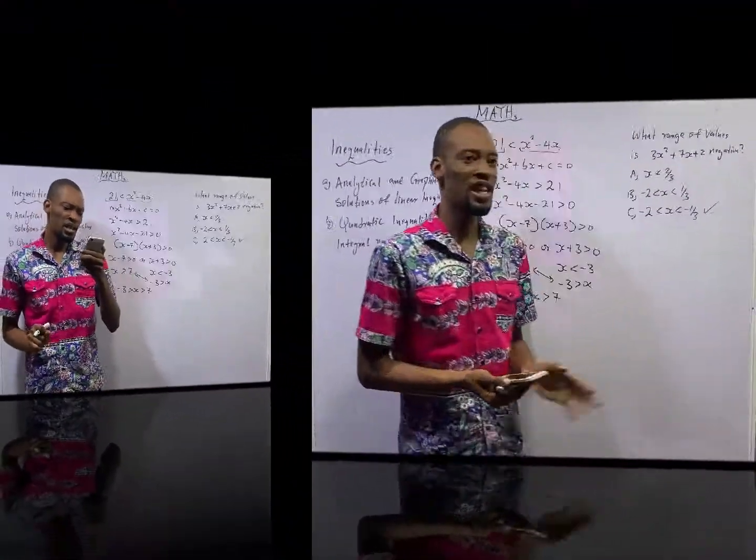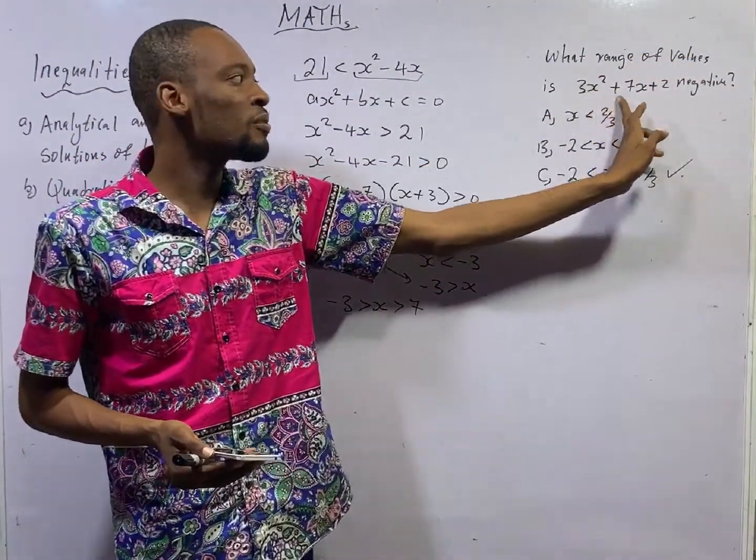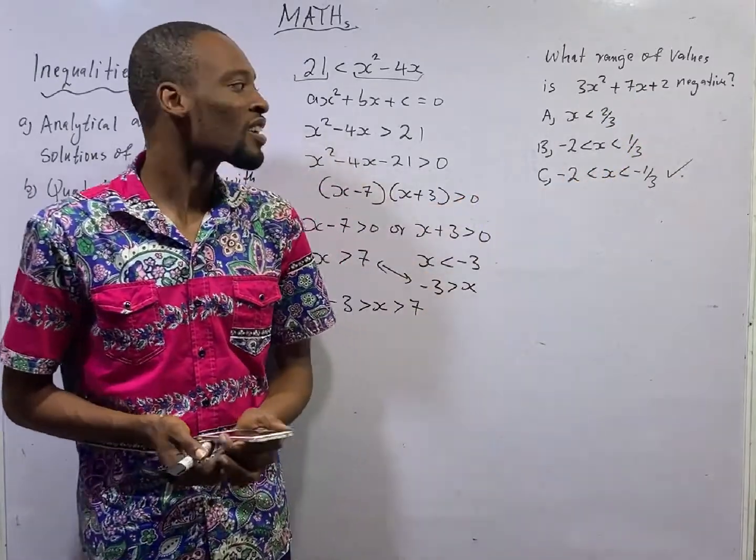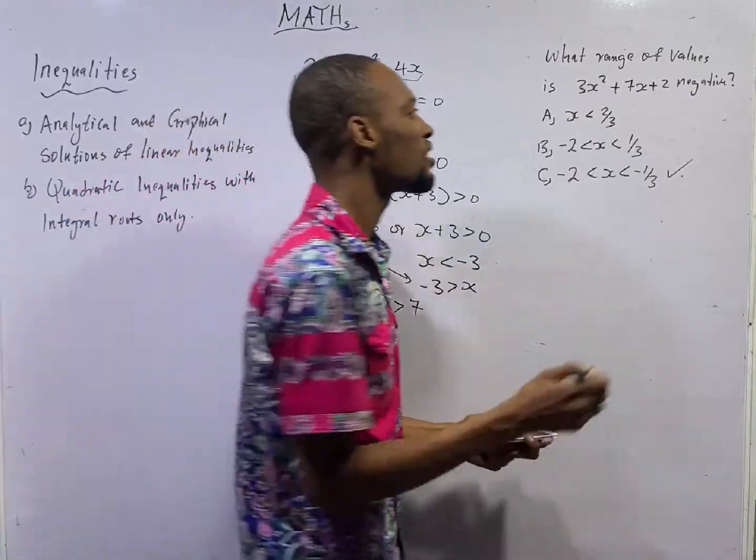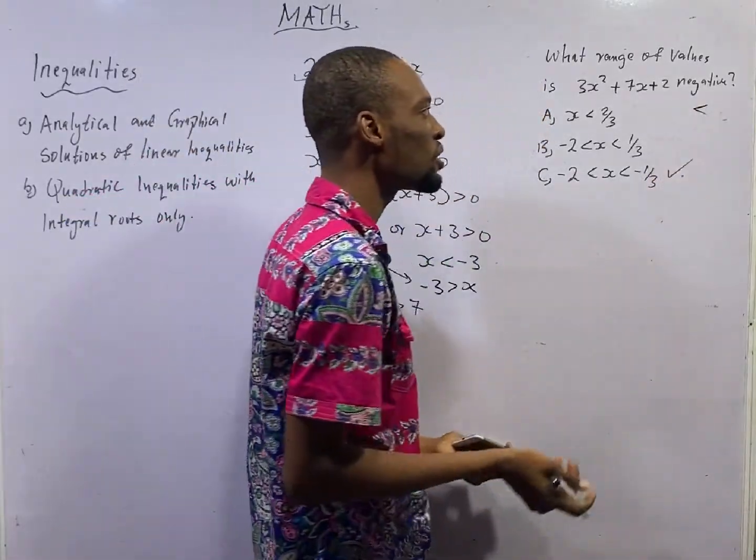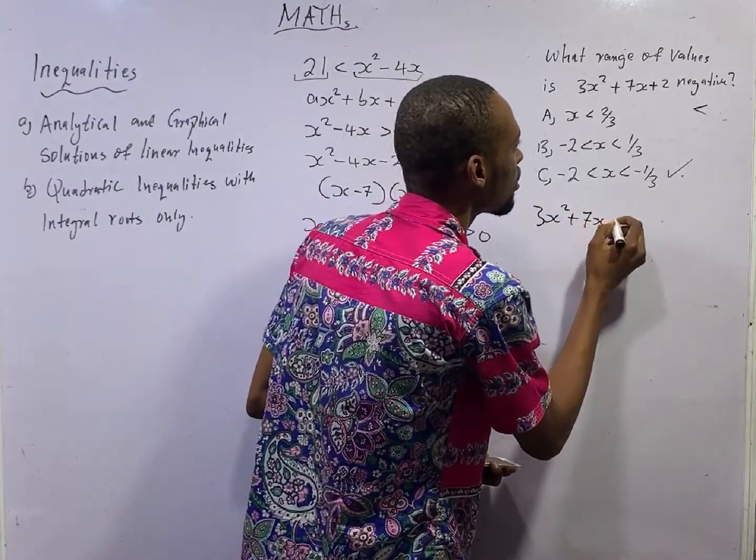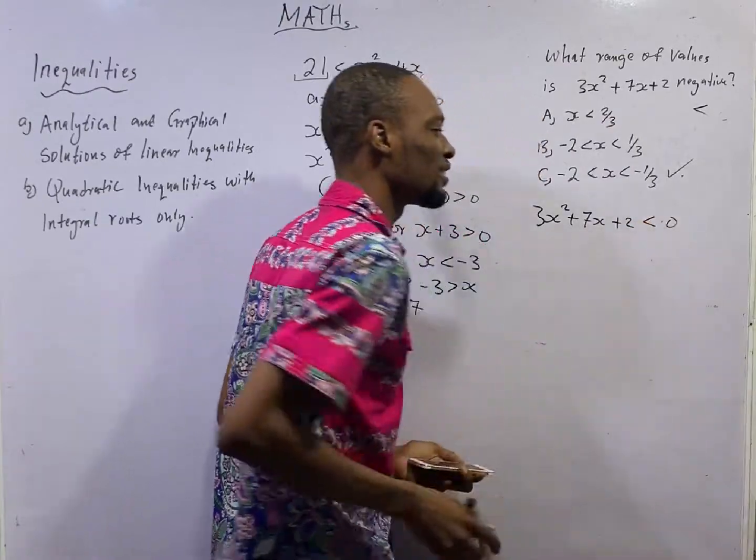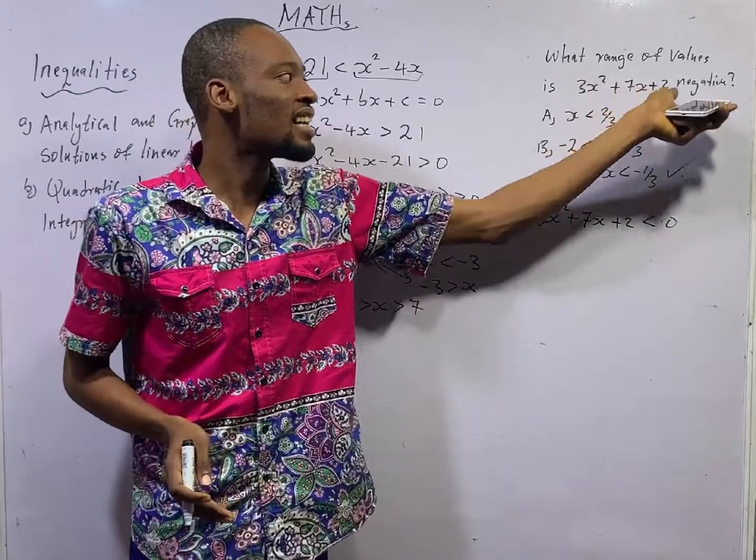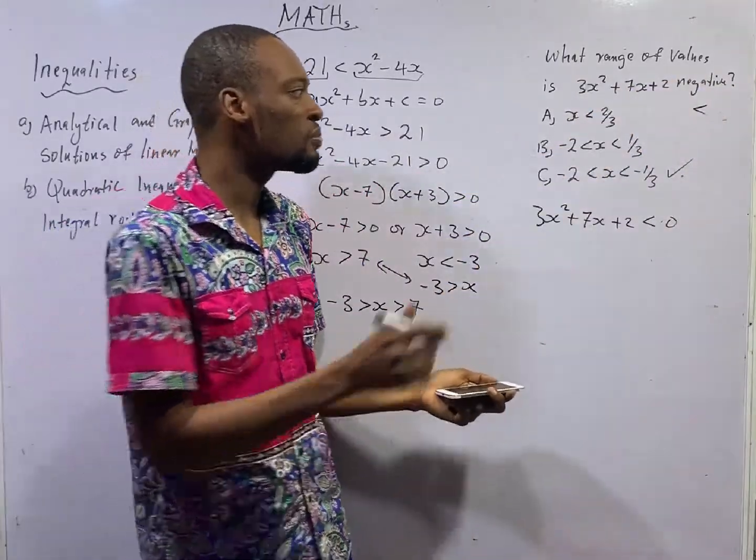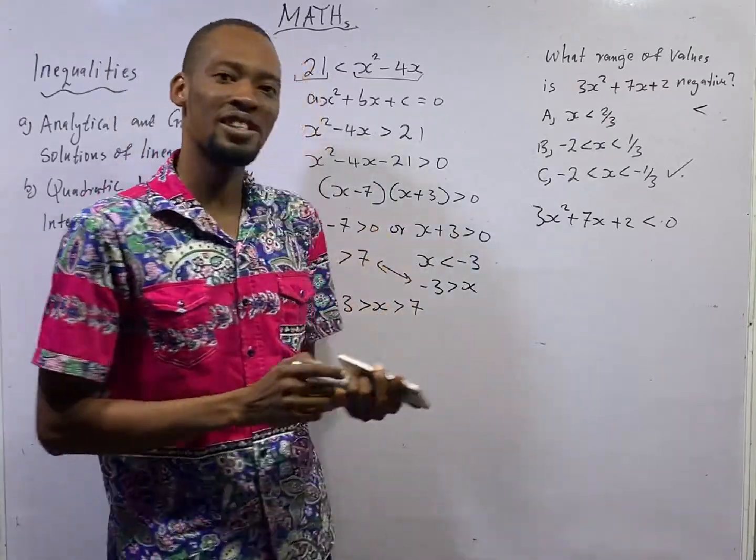Anytime you are given questions like this. What range of values is 3s² + 7s + 2 negative? When you have something like this, for the values to be negative, it simply means lesser than. You simply see 3s² + 7s + 2 is lesser than 0. If we are told what values of this guy is positive, for them to be positive, you simply use greater than. Take note of that. Now let's see the next question.